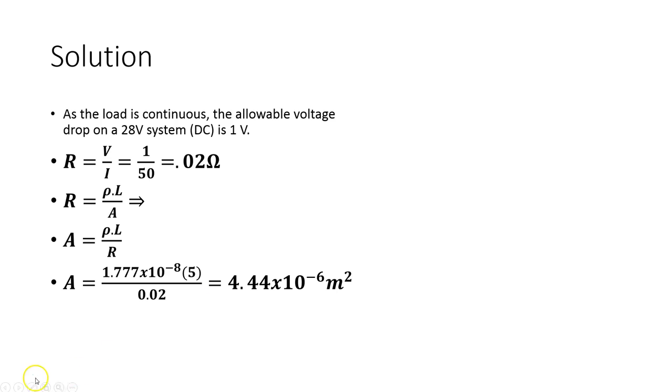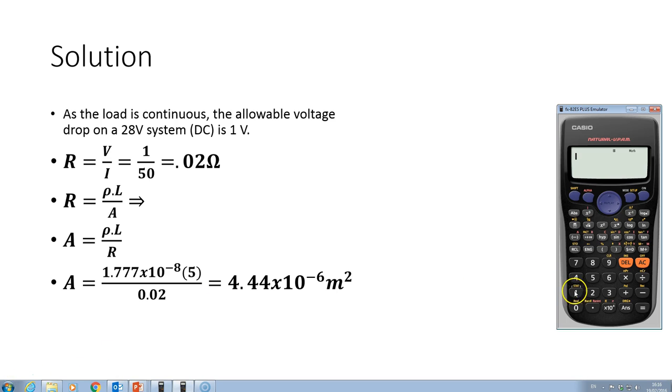So we can do that quickly on the calculator. So if I go 1.77 by 10 to the power of minus 8 and multiply that by 5. Then we are going to divide our answer by 0.02 and I get 4.44 by 10 to the power of minus 6.